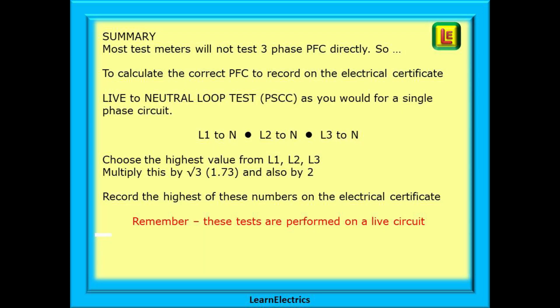A brief summary then. Most multifunction test meters will not test three-phase PFC directly. So, in order to calculate the correct PFC to record on the electrical certificate, we must carry out a live to neutral loop test, PSCC, just as you would for a single-phase circuit. We will do three tests and write down the results for comparison: L1 to neutral, L2 to neutral, and L3 to neutral. Then, we choose the highest value from the L1, L2, L3 tests. Multiply this highest value by root 3, or 1.73, and also multiply it by 2. Record the highest of these numbers on the electrical certificate, which is usually the times 2 value. And do remember, these tests are performed on a live circuit. Always work safely at all times.